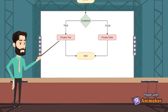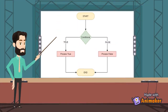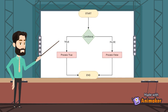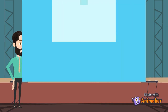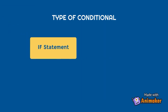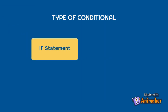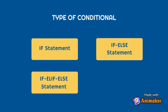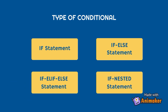Next is a logic flow diagram about conditioning. There are two alternatives. The first alternative is when a condition is declared true, and the second alternative is when a condition is declared false. These are the types of conditioning: if statement, if-else statement, if-elif-else statement, and if-nested statement.